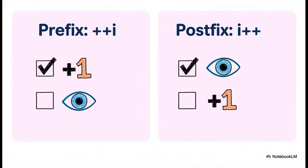And this right here is the crucial difference. If you put the plus plus before the variable, that's called prefix. And the rule is simple. Increment first, then use the new value. But if you put it after the variable, that's postfix. And the rule is the total opposite. Use the current value first and then increment it. This timing, it's everything.